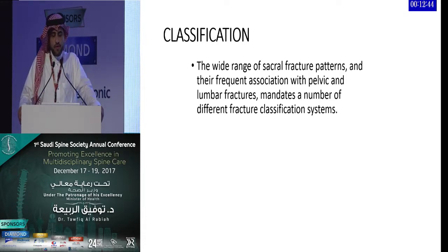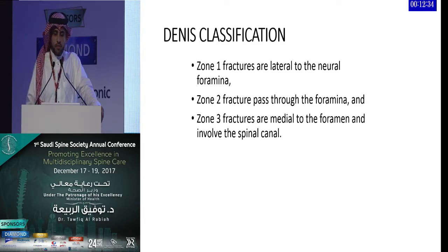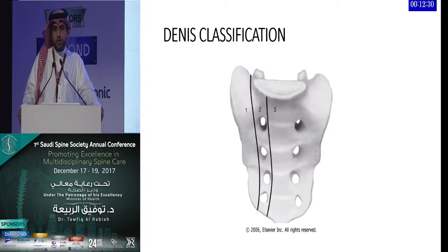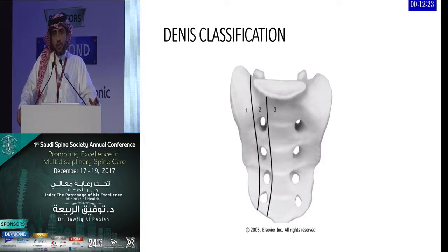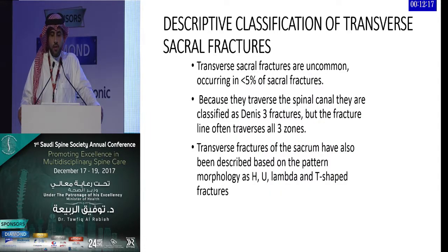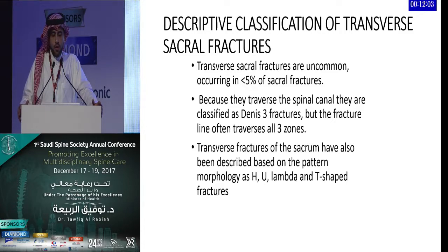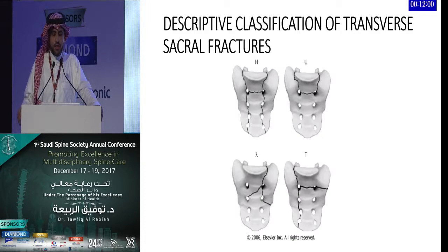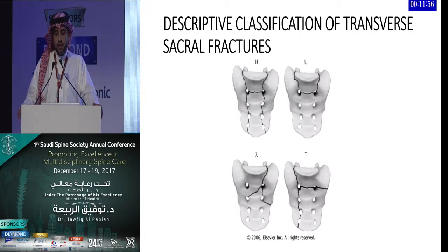There are different types of classification systems for sacral fractures — some descriptive, some based on treatment planning. The Denis classification is the most commonly referenced, defining zones of injury: Zone 1 is lateral to the foramina, Zone 2 involves the foramina, and Zone 3 is medial to the foramina or involves the canal. More descriptive classifications cover transverse and complex patterns, typically classified as Denis Zone 3, which may be H-shaped, U-shaped, lambda-shaped, or T-shaped fractures.